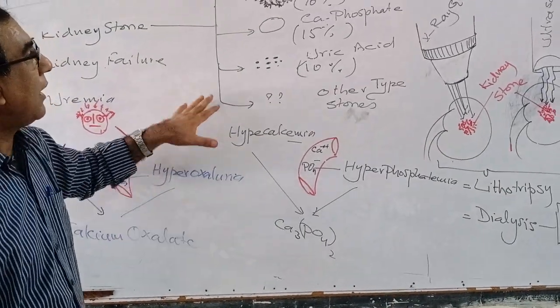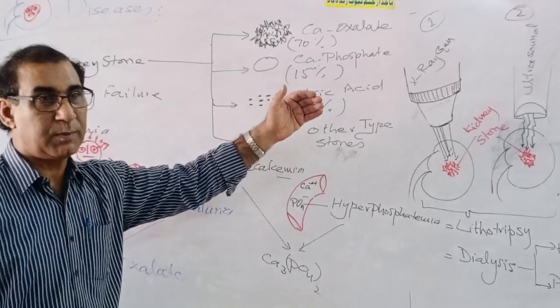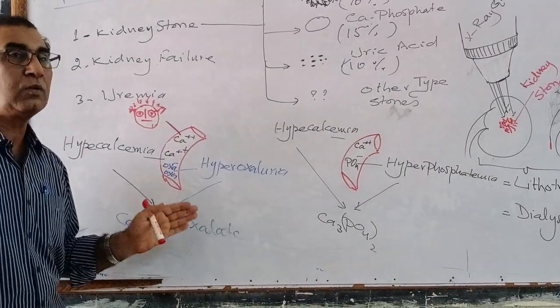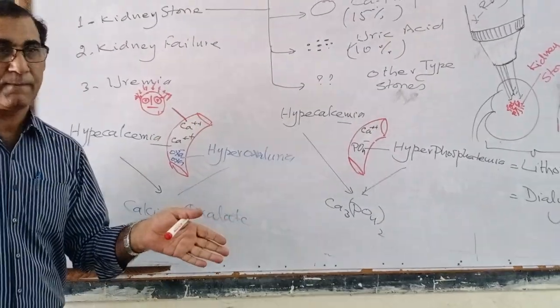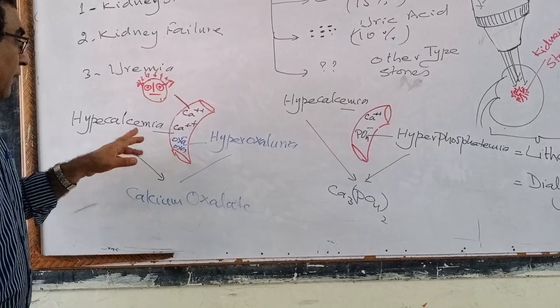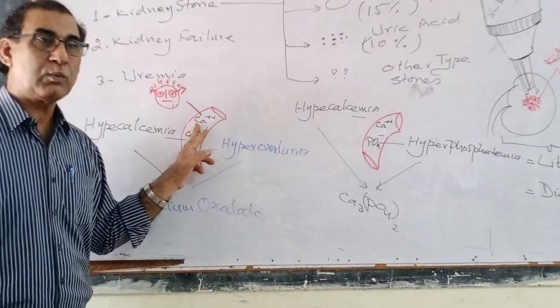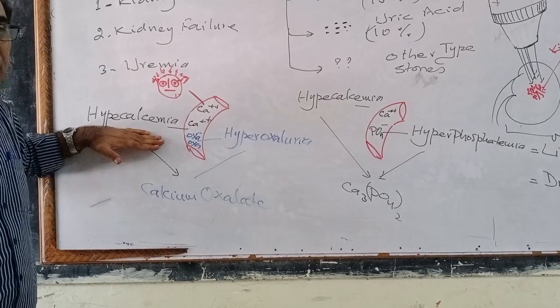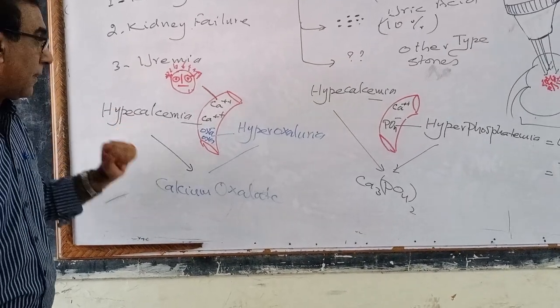How is calcium oxalate formed? Let us discuss. When there is a higher amount of calcium in your blood due to any metabolic reason, when there is a higher amount of calcium in your blood, this condition is known as hypercalcemia.